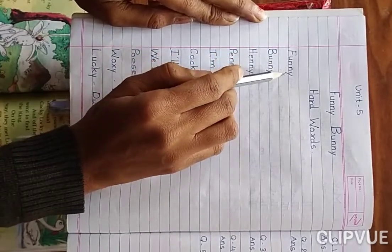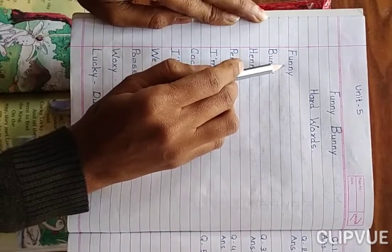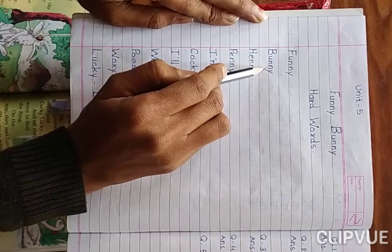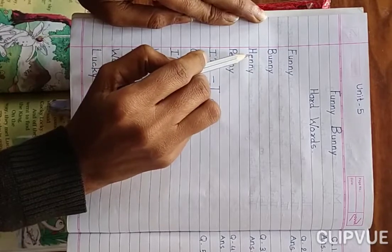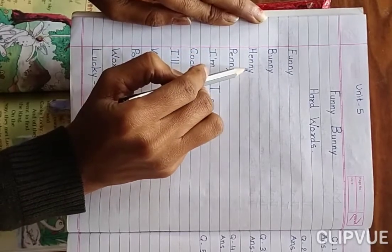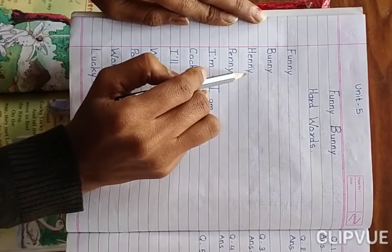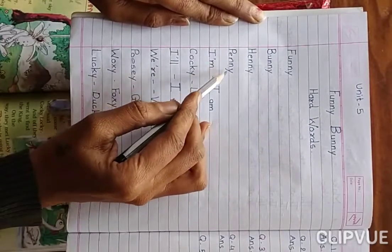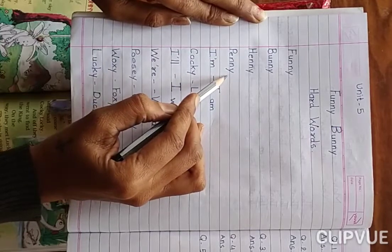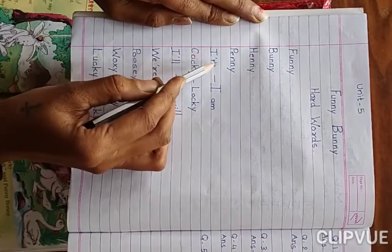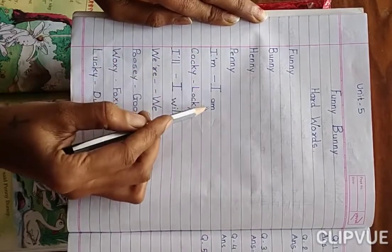F-U-N-N-Y, Funny. Funny is a name. B-U-N-N-Y, Bunny. Bunny is also a name. H-E-N-N-Y, Honey. Honey is also a name in this chapter. P-E-N-N-Y, Penny. Okay, 'am' — I am. This is the short form of I am.